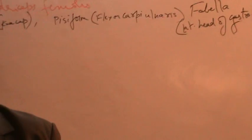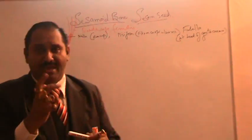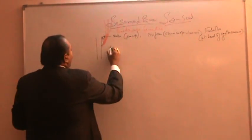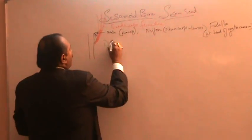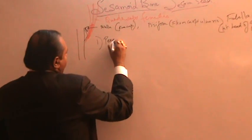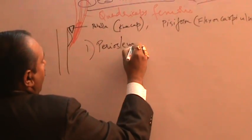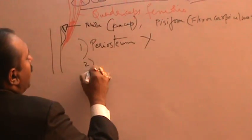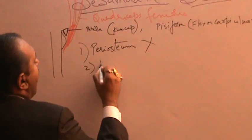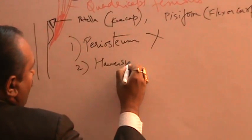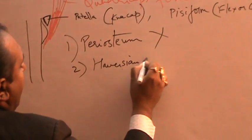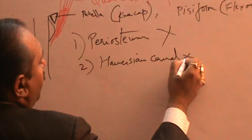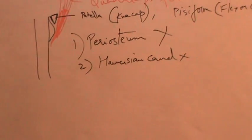The sesamoid bones have a peculiarity: they don't have periosteum and they don't have a Haversian canal system.